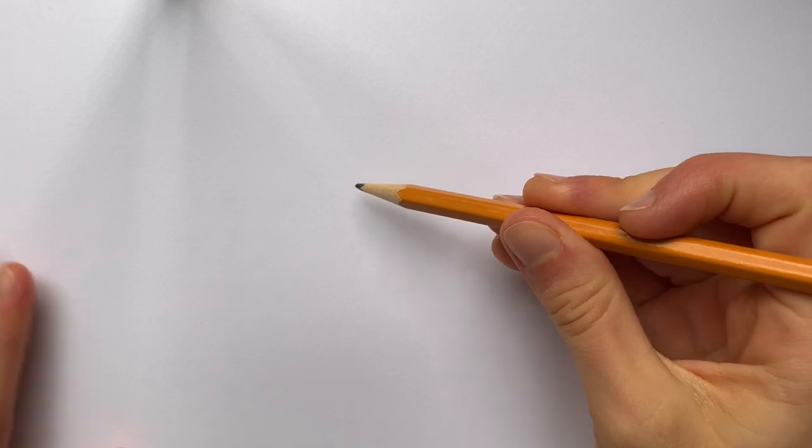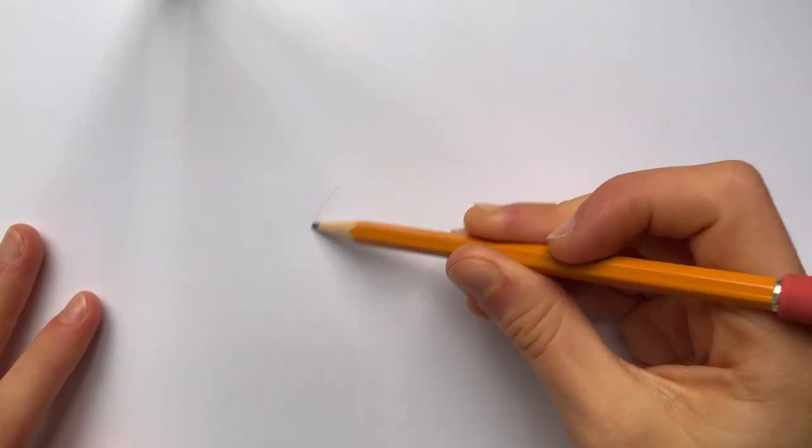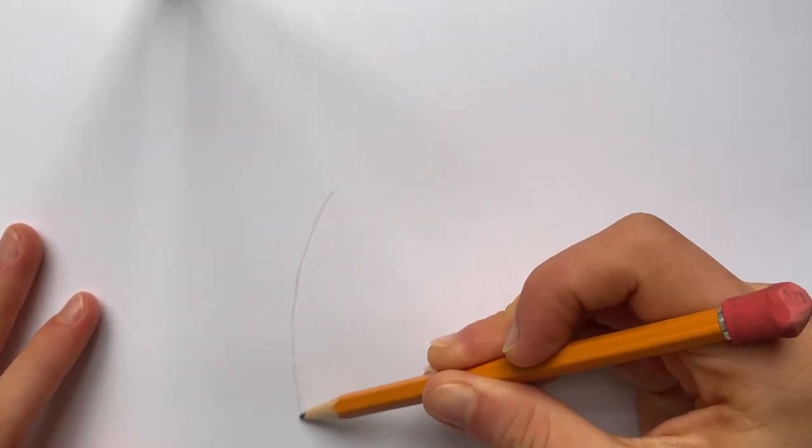Okay, it is surfboard time. To do a surfboard, we're going to need the surfboard shape. There is no name for that shape, so I'm just going to sketch it out for you. You're going to start with kind of a curve line.